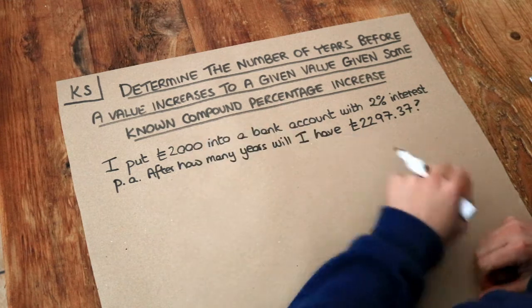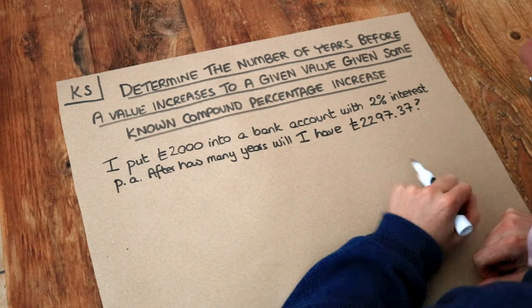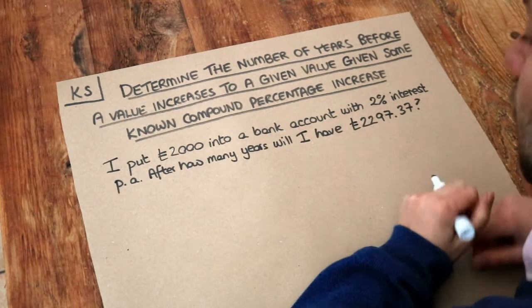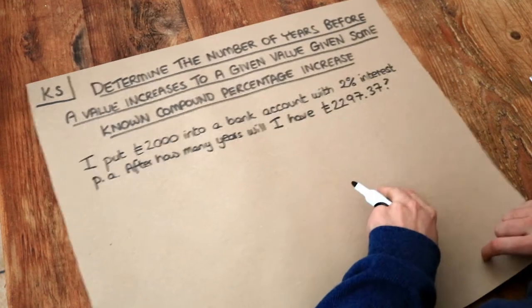We've got this problem here: I put £2,000 into a bank account with 2% interest per annum. PA means per annum, per year. After how many years will I have £2,297.37?